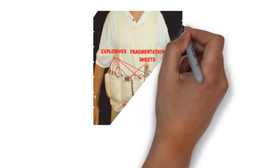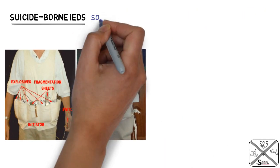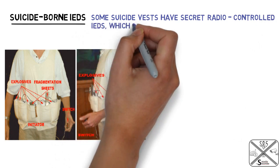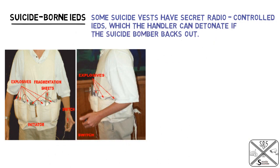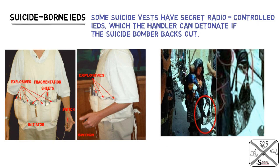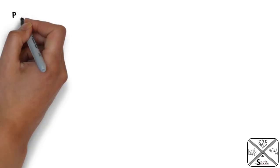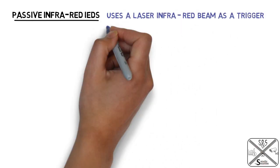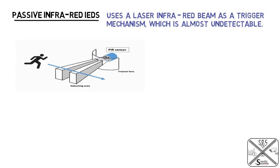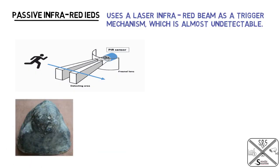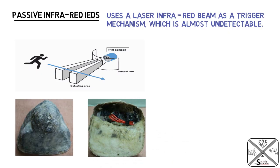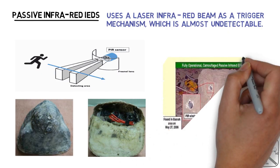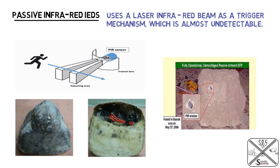Next is the suicide-borne IED, which is carried by a suicide bomber. Some suicide vests have secret radio control IEDs which the handler can detonate if the suicide bomber backs out. Next is the passive infrared IED, which uses a laser infrared beam as a trigger mechanism and is almost undetectable. Its trigger detects a change in thermal or infrared energy, and the sensors are wired to an arming device.